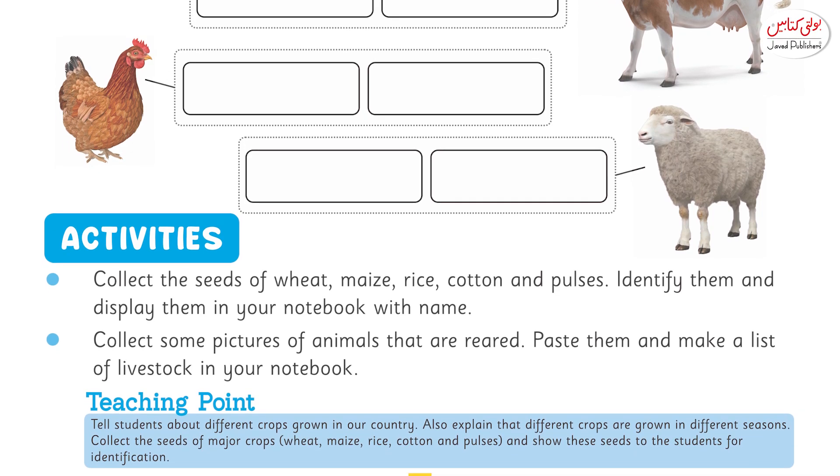Now moving on to the activities of this chapter. Wheat, maize, rice, cotton, and pulses — identify them and display them in your notebook with the name.